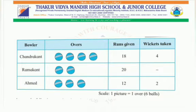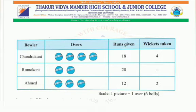Students, let us understand this with the help of an example. The table below gives some bowling figures related to a cricket match. As you can see here, the first column is ballers, the second one is overs, the third one is runs given, and the fourth one is wickets taken. The names of each baller are Chandrakant, Ramakant, and Ahmed.